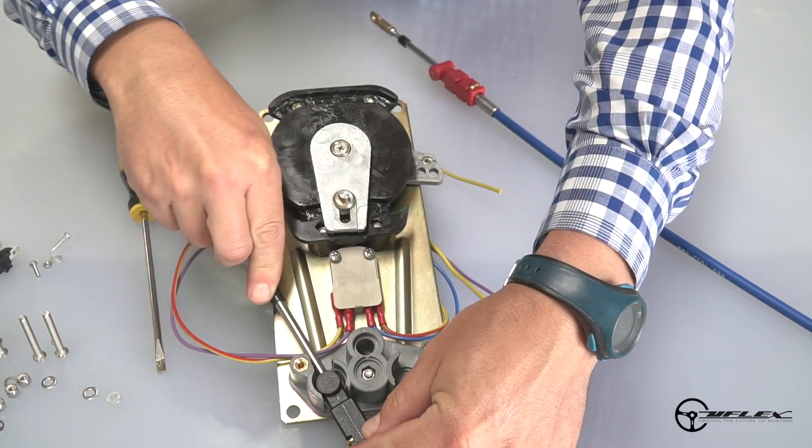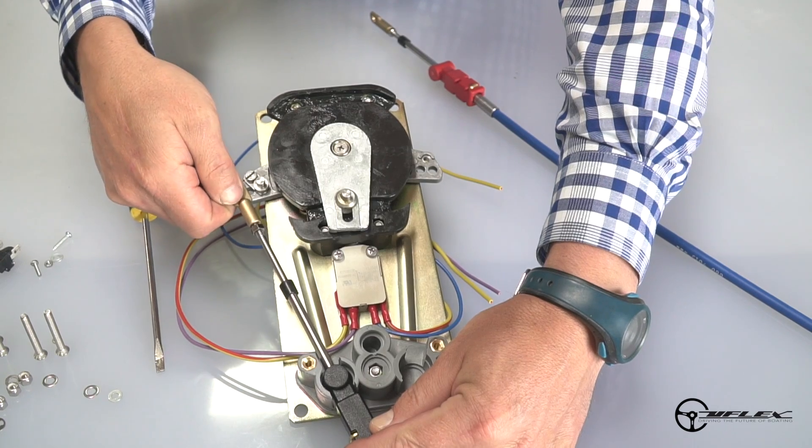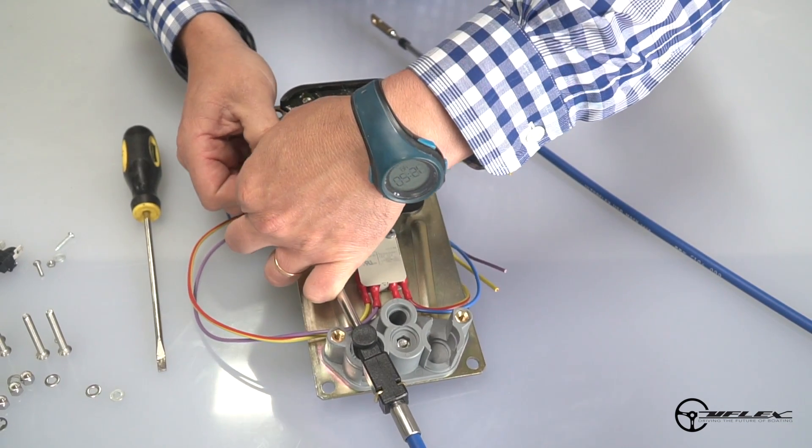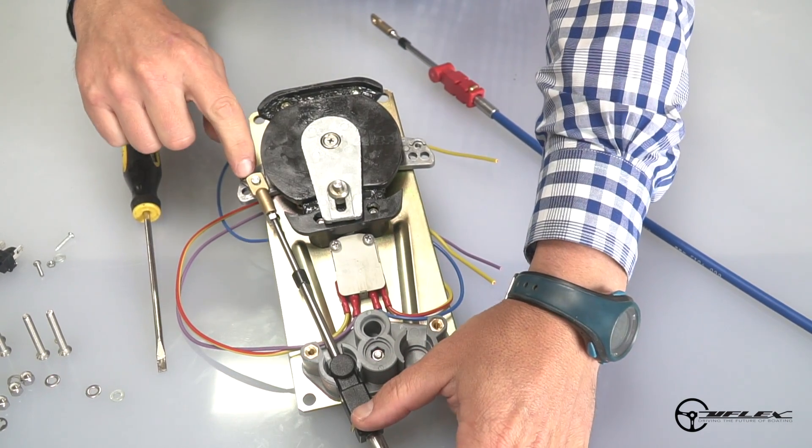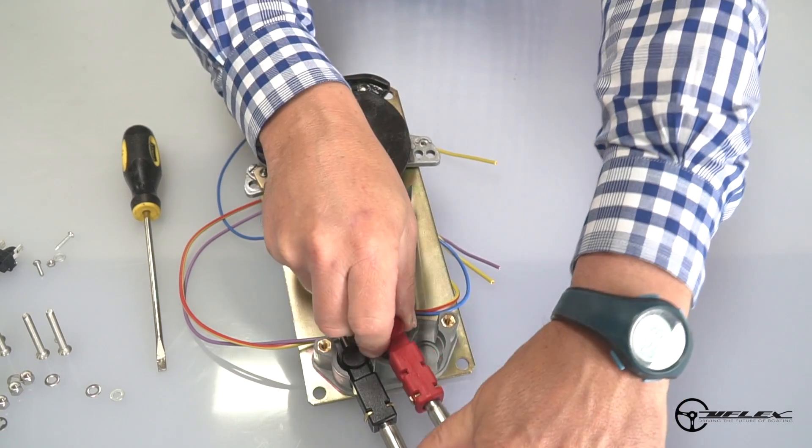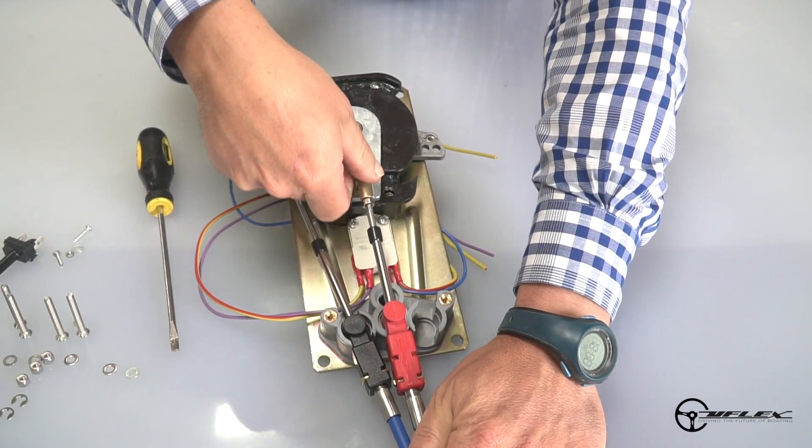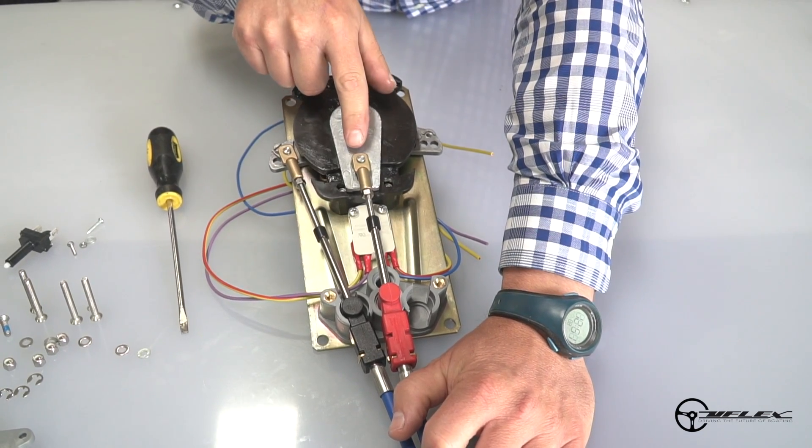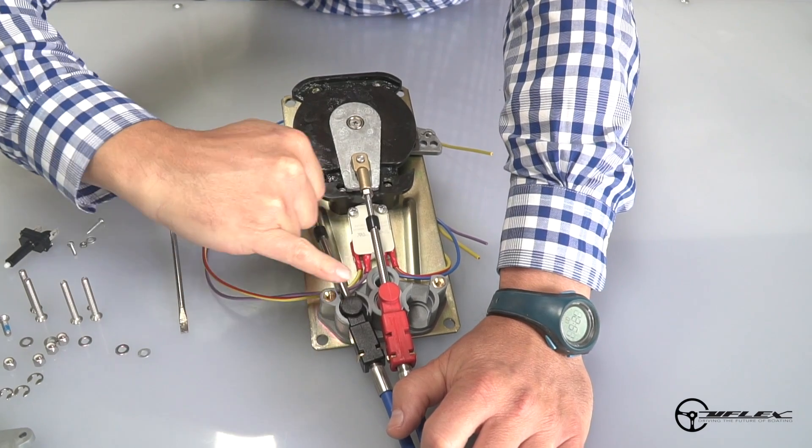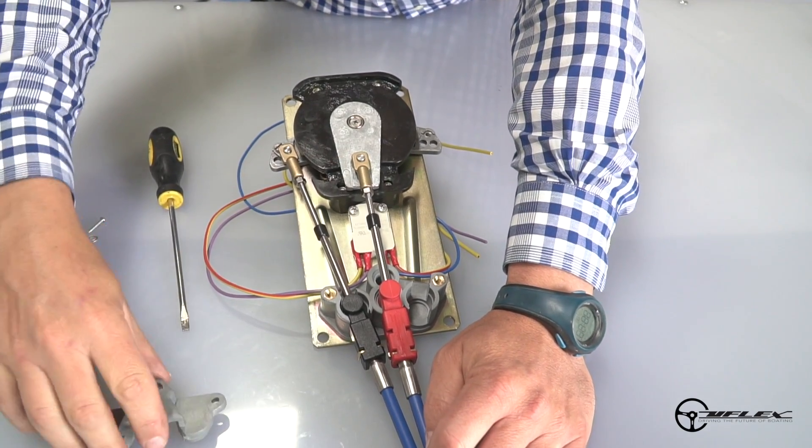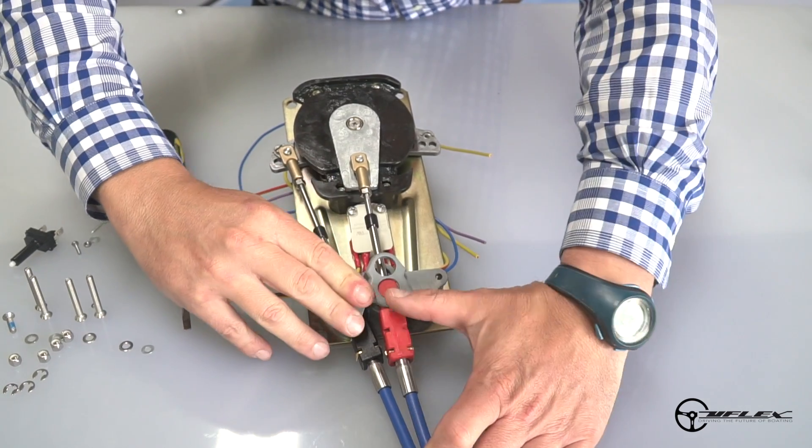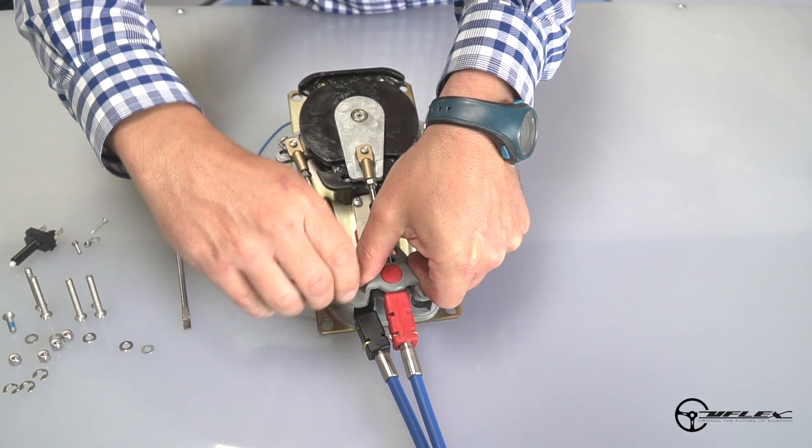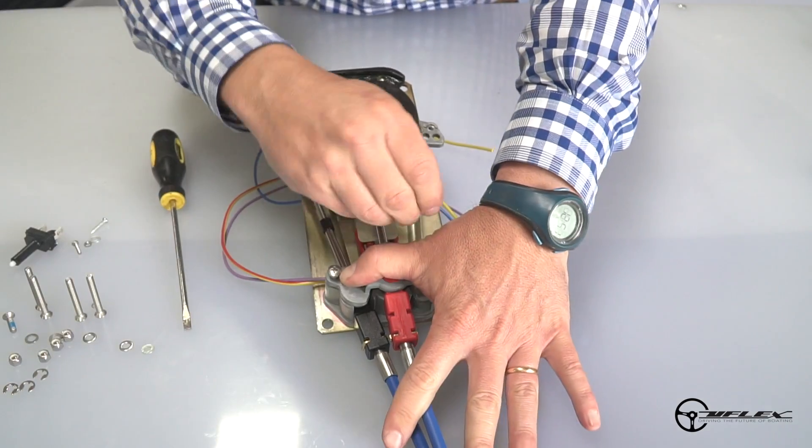I'm going to place the shift cable in its groove, make sure that it goes all the way in. And then I'll have to place the throttle cable on top. In this particular application, the throttle cable is in pulling configuration and it goes in the bottom seat on the control body. I can lock the cable up this way, once they are in place, with the hardware supplied.